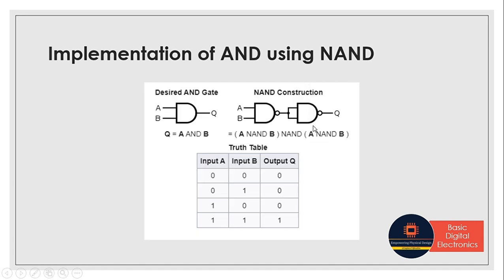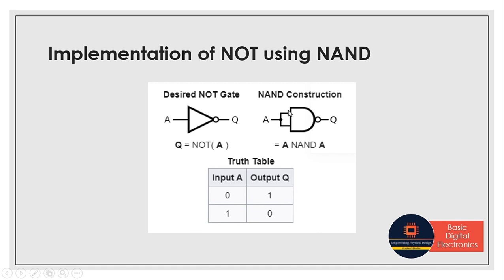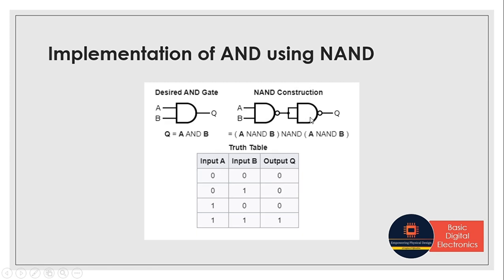Next, we will see how to implement AND using NAND. We know that AND means NAND followed by a NOT. So this is a two-input NAND and this is the NOT. We have seen in the previous slide that this is the NOT constructed using NAND gate. So this NAND followed by a NOT will give us the AND gate, and the functionality remains the same.